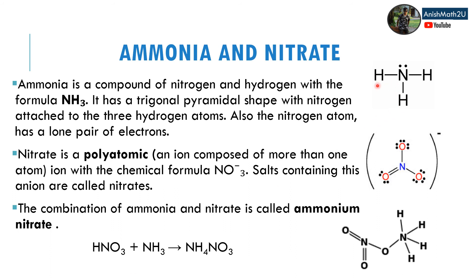So in NH3 there are three hydrogens and there is a lone pair of electrons on the nitrogen. Nitrate is a polyatomic ion with the chemical formula NO3-. Salts containing this anion are called nitrates. Polyatomic ions are ions composed of more than one atom.